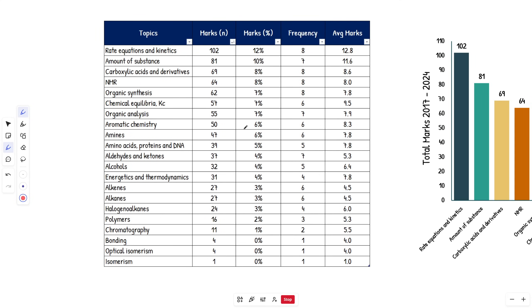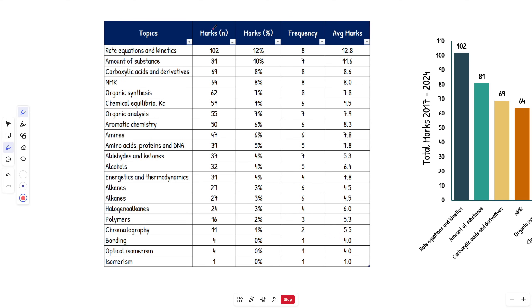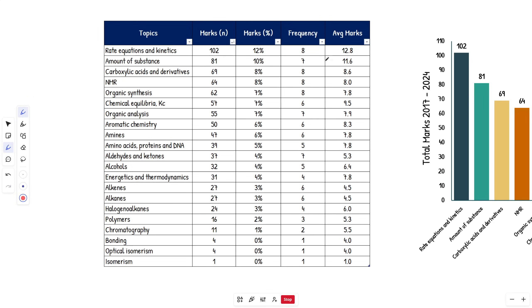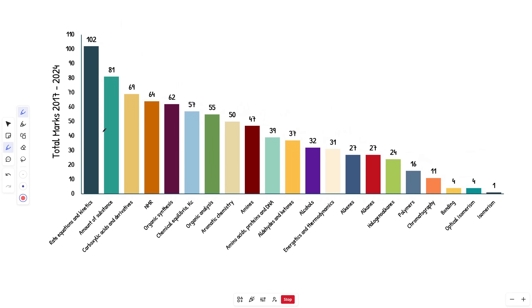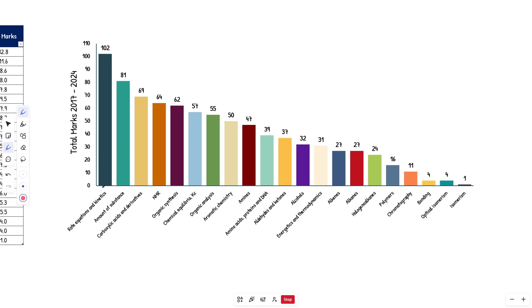These are all of the topics that can come up in Paper 2 and have come up in Paper 2. You've got the marks here, the percentage of marks out of the total — I believe it's 840 across the eight years — then the frequency, when that topic did appear, how many papers it appeared in, and average marks per paper. Looking at this graph, it's a pretty good representation. The clear winner here is rate equations and kinetics.